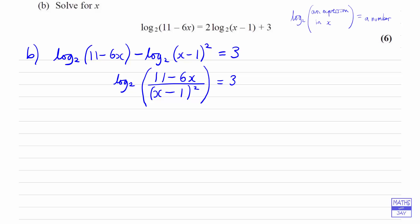So now all we need to do is write this as an index expression. So we know the base is 2, the index is 3. So the fraction involving x can be written on its own. So 11 minus 6x over x minus 1 squared is the denominator. And that's equal to the base to the power of the index, so 2 to the power of 3, and we know that that's 8. So now we've got rid of the logs.